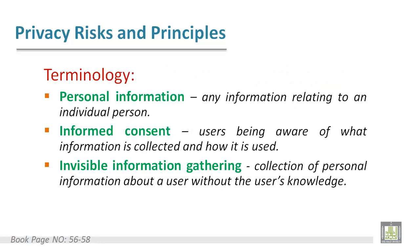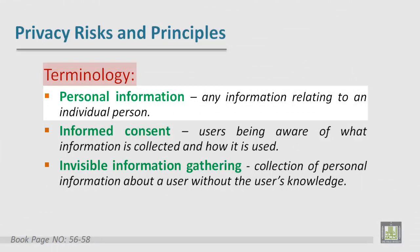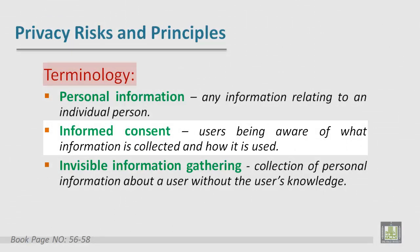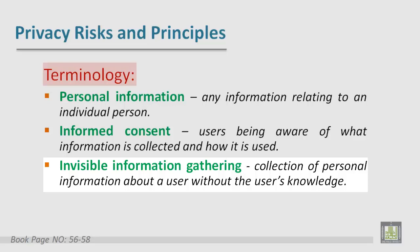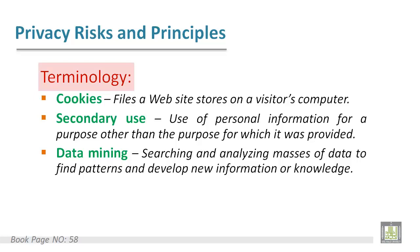Here are some privacy terminologies. Personal information is any information relating to an individual person. Informed consent refers to the user being aware of what information is collected and how it is used. Invisible information gathering is the collection of personal information about a user without the user's knowledge. Cookies are files a website stores on a visitor's computer.